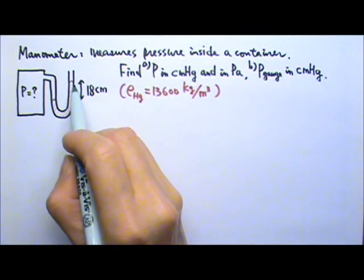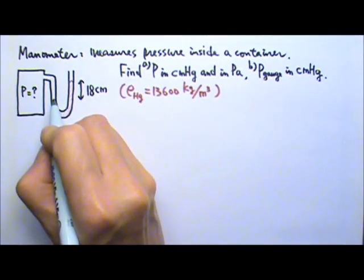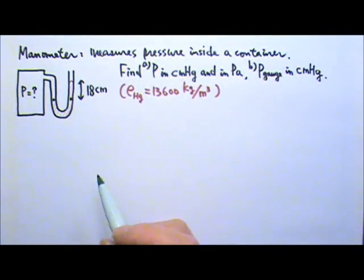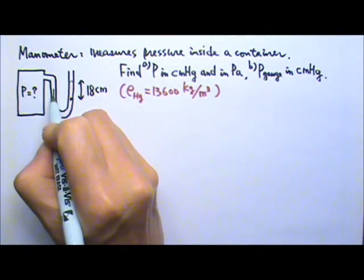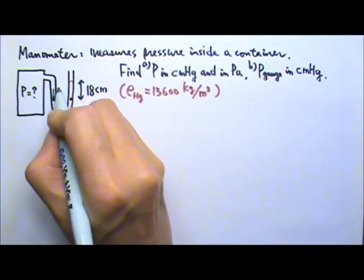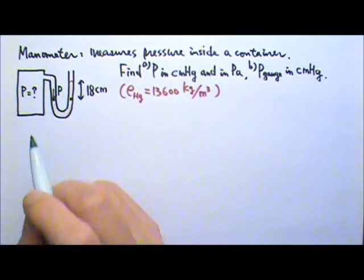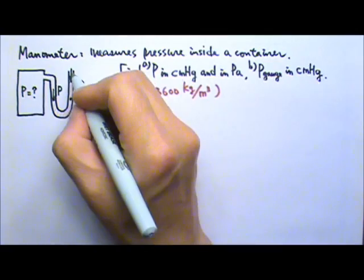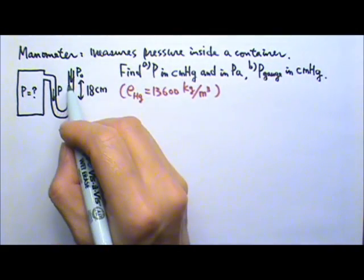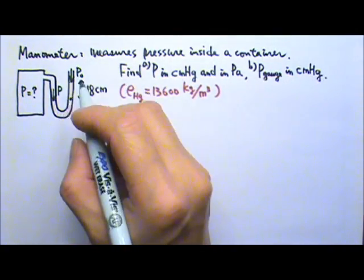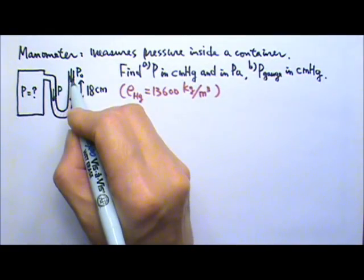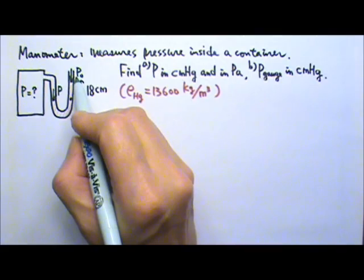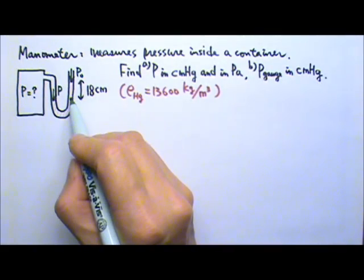When the mercury reaches equilibrium and stops flowing, the pressure here and there must be the same. The pressure over here comes from the pressure from the container, so the pressure here is P. The pressure over here is the pressure on the top, which is exposed to the atmosphere — that's the atmospheric pressure on the top plus the pressure from this mercury column: Po plus ρgh of the mercury column.